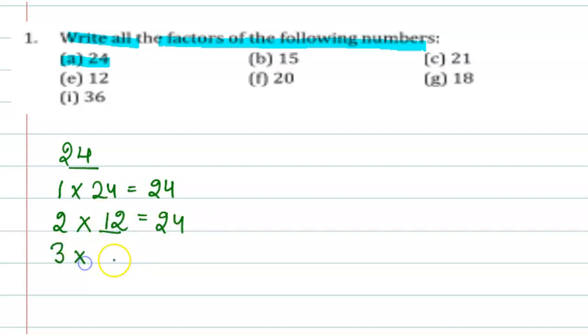Now next is 3 into what number is multiplied by 3 to give 24? 8, 3 times 8 is 24. Now next 4, 4 into what number should be multiplied with this to give 24 is 6.